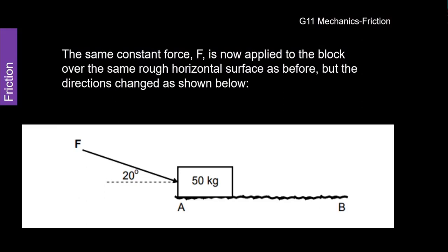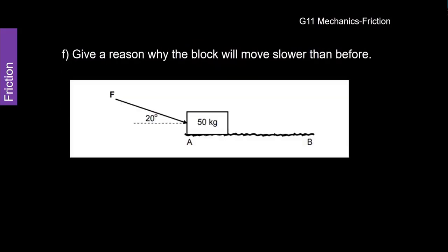Okay. What now? They give us another question. The same constant force, F, is applied to the block over the same rough horizontal surface as before. But the direction has changed. You can see here, look there. Now it is a pushing force. It is not a pulling force. They are asking us to give us a reason why the block will move slower than before. Hmm. This is interesting.